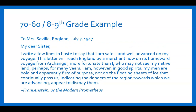Here's an example of a 70 to 60 score — an 8th to 9th grade example from Frankenstein, or the Modern Prometheus, in the form of a letter: 'My dear sister, I write a few lines in haste to say that I am safe and well advanced on my voyage. This letter will reach England by a merchant now on its homeward voyage from Archangel. More fortunate than I, who may not see my native land perhaps for many years. I am, however, in good spirits. My men are bold and apparently firm of purpose. Nor do the floating sheets of ice that continually pass us, indicating the dangers of the region towards which we are advancing, appear to dismay them.'